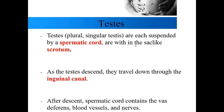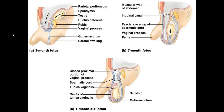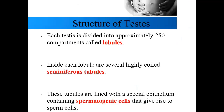After the testes fully descend, the spermatic cord will contain various nerves, blood vessels, and also the vas deferens. Here we have a male fetus and a newborn male infant showing differences in development. At about three months the testes are here; at seven months they've descended through the inguinal canal; and in a newborn male the testes are fully external to the body.